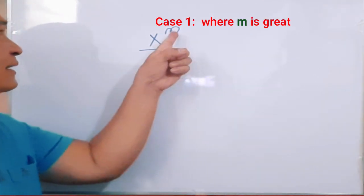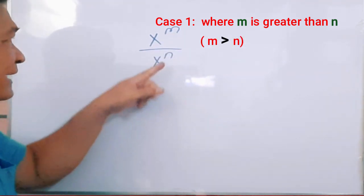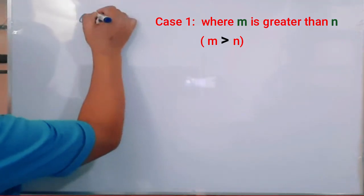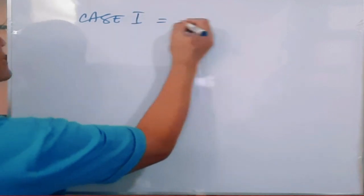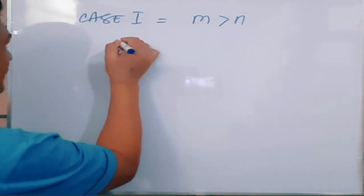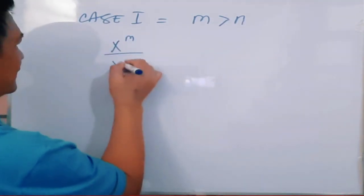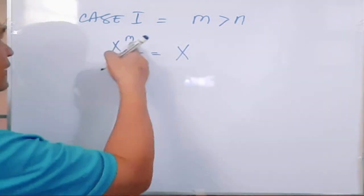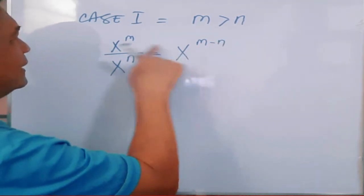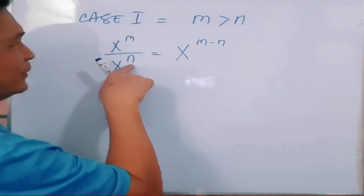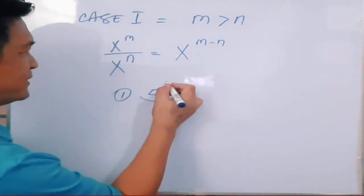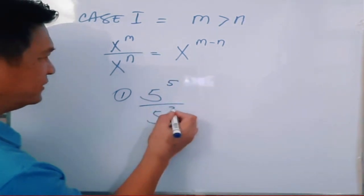Case 1 is when the exponent of your numerator m is greater than the exponent of your denominator n. So if you have x raised to m over x raised to n, you subtract the exponents — that is m minus n — and your result stays in the numerator. Don't forget that m is greater than n. For example, if you have 5 raised to the fifth power over 5 raised to the third power.